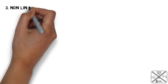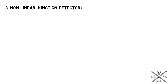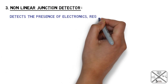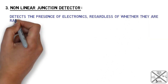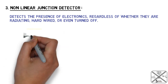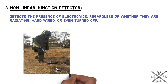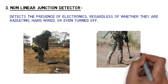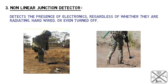Next is the non-linear junction detector, which detects the presence of electronics regardless of whether they are radiating, hardwired, or even turned off. It detects physical properties and not energy emissions. Therefore, devices that contain circuit boards and their components — like cell phones, video cameras, and microphones — can be detected.